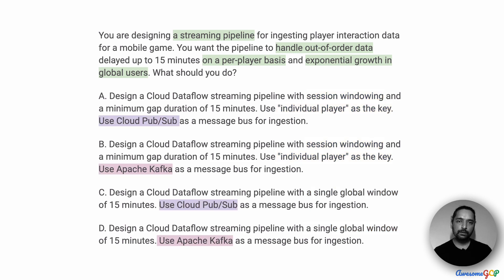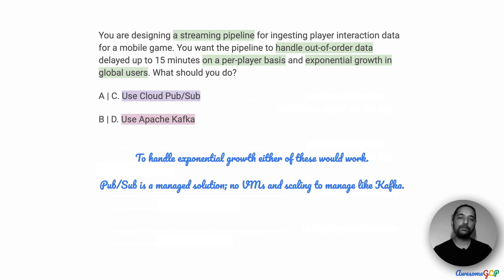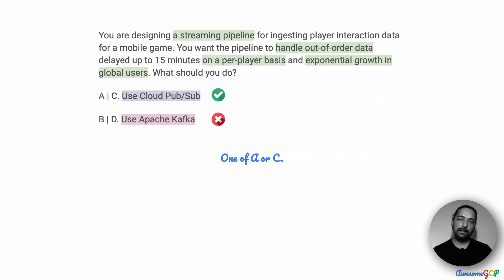The other differentiating factor is a choice between Cloud Pub/Sub and Apache Kafka — A and C use Pub/Sub, while B and D use Apache Kafka. To handle exponential growth of globally spread users, either could technically work. However, Pub/Sub is the managed solution for this on Google Cloud — you won't have VMs to manage and won't need to scale it yourself, so there's less to administer and operate. Given that, we eliminate Apache Kafka as the more operational option, leaving us with A or C.